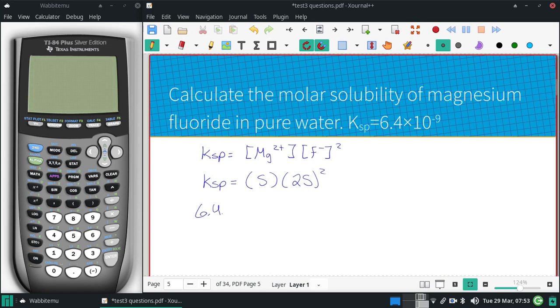This is going to turn into 6.4 times 10 to the negative 9th equals 4s cubed.